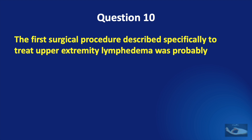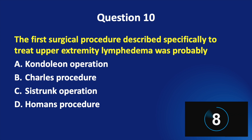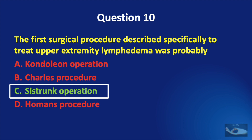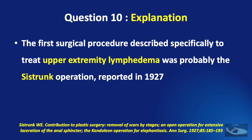Question No. 10. The first surgical procedure described specifically to treat upper extremity lymphedema was most probably the Condoleon operation, Charles procedure, Sistrunk operation, or Hohmann's procedure? The correct answer is the Sistrunk operation. The first reported surgical procedure for lymphedema was published in 1912 by Charles, who described a procedure for scrotal lymphedema and its application to lower limb lymphedema. The first surgical procedure described specifically to treat upper extremity lymphedema was probably the Sistrunk operation, reported in 1927.